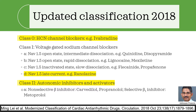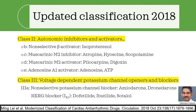Class 2 has been renamed as Autonomic Inhibitors and Activators. Class 2B is non-selective beta activator, with the prototype being isoproterenol. Class 2C includes Muscarinic M2 inhibitors like Atropine, Hyoscine and Scopolamine. Class 2D is Muscarinic M2 activator, which includes Pilocarpine and Digoxin. Class 2E includes Adenosine A1 activators like Adenosine and ATP.